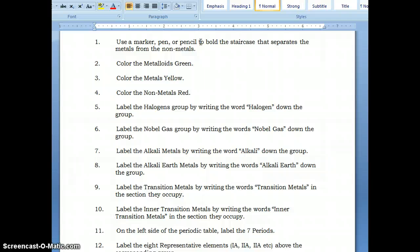Your second step is to color your metalloids green. Remember that the metalloids are the ones that are touching that line with the exception of aluminum.